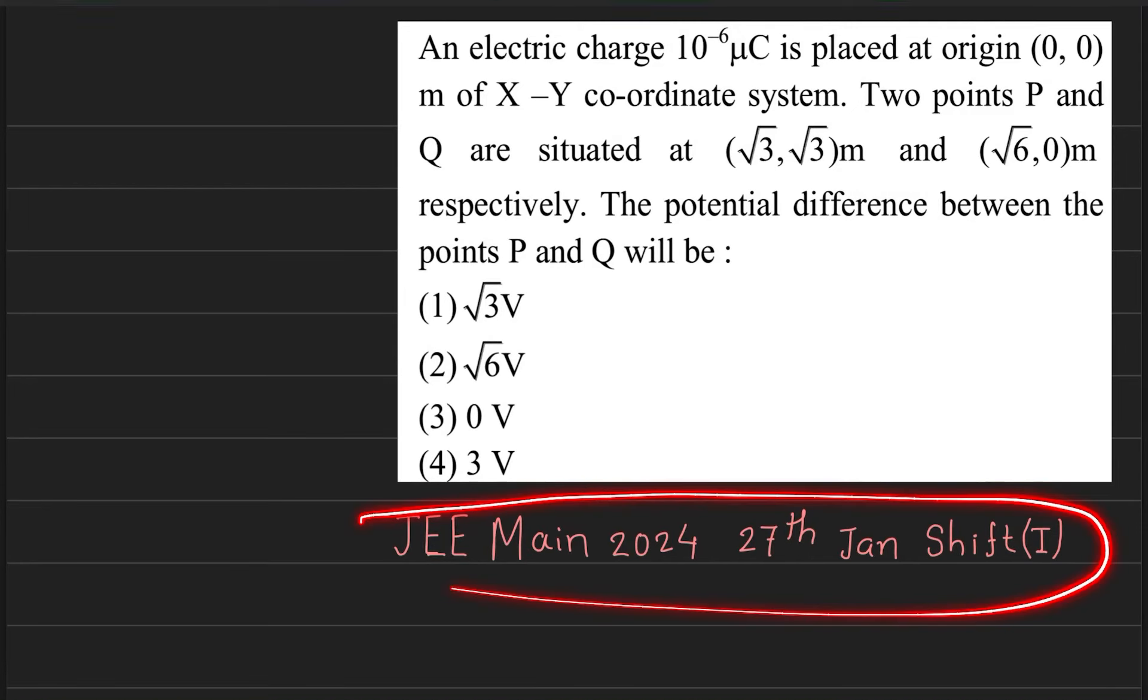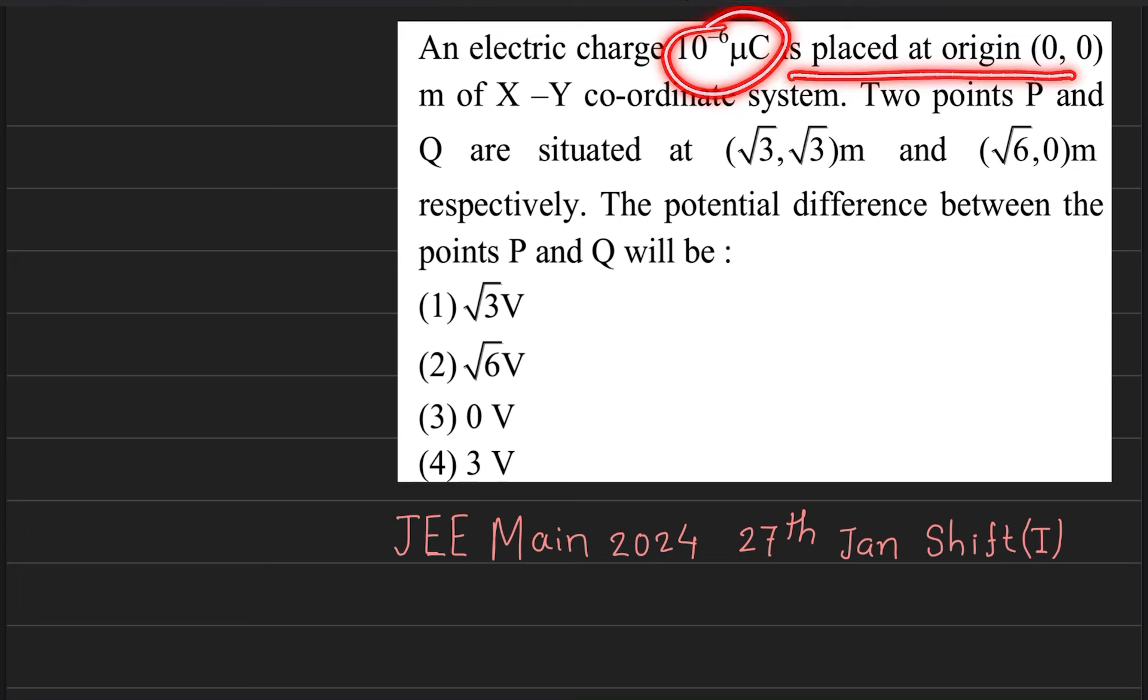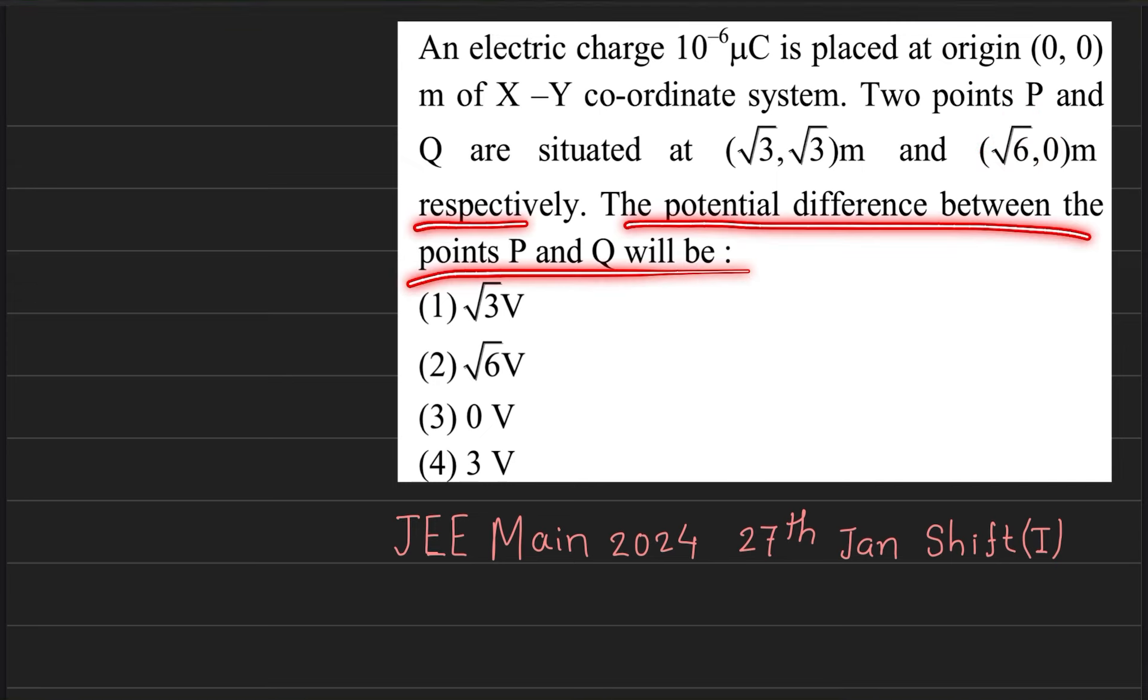Hello guys, this is JEE Main 2024, 27th January shift 1 question. An electric charge 10 to the power minus 6 microcoulomb is placed at the origin of an xy coordinate system. Two points P and Q are situated at root 3 comma root 3 and root 6 comma 0 meters respectively. The potential difference between P and Q.